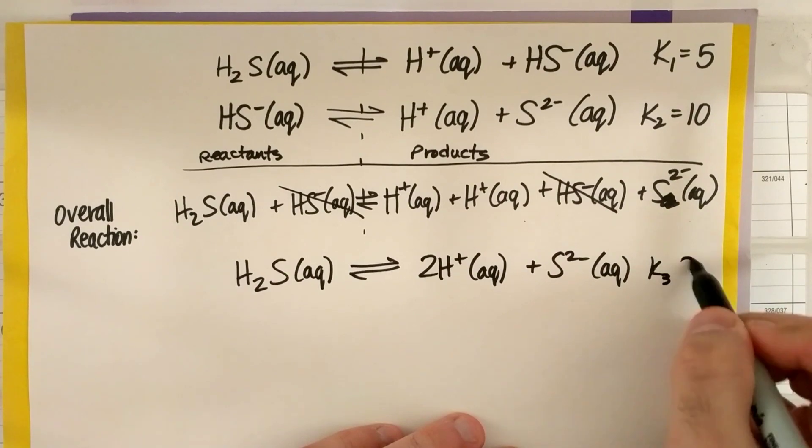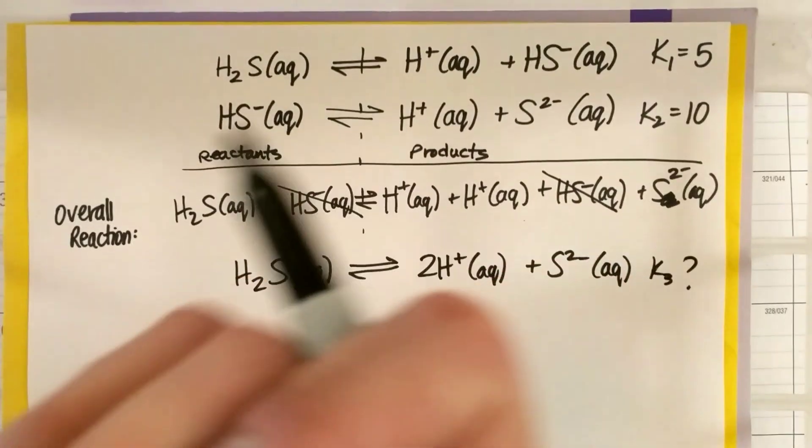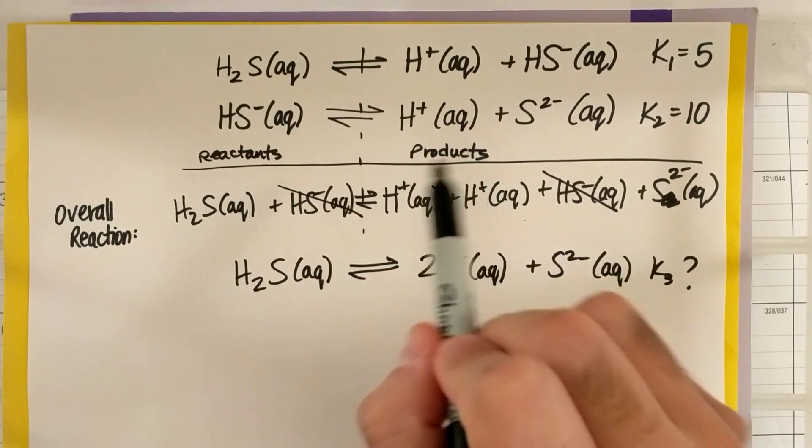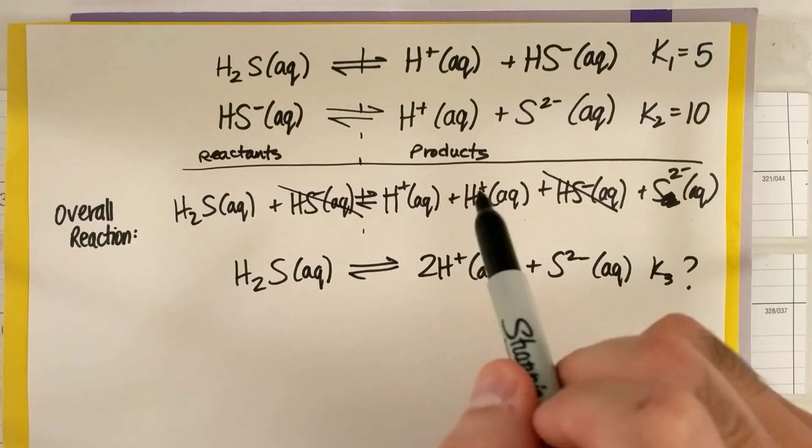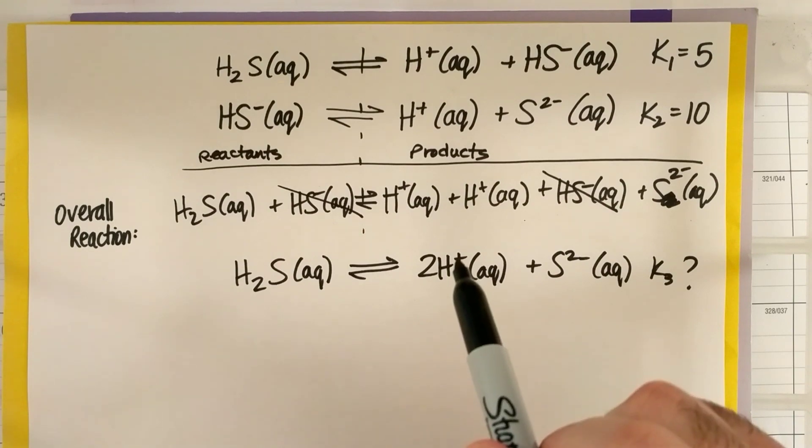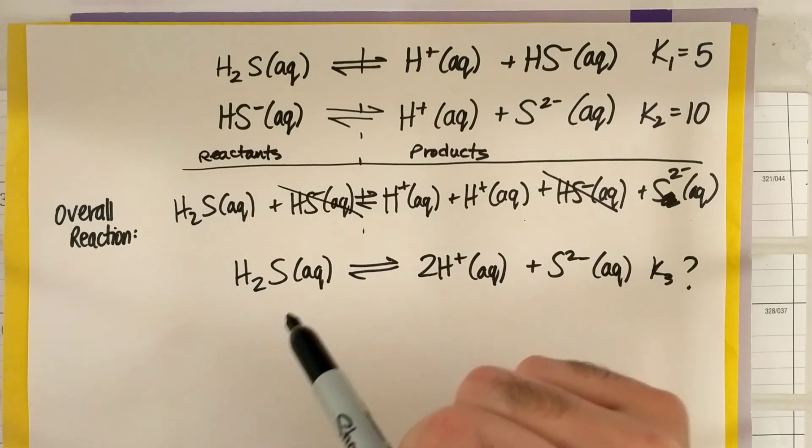Okay, and this is going to have a K, I'm going to call it K3 value. Now, notice, when I combined all like terms, this is still balanced. Two H's, two H's, one S, one S. And in the question it says, oh, this reaction happens in two steps. And you're going to see this when we get to our acid-base chapter where we have something known as a diprotic or triprotic acid, which the H plus kind of falls off stepwise.